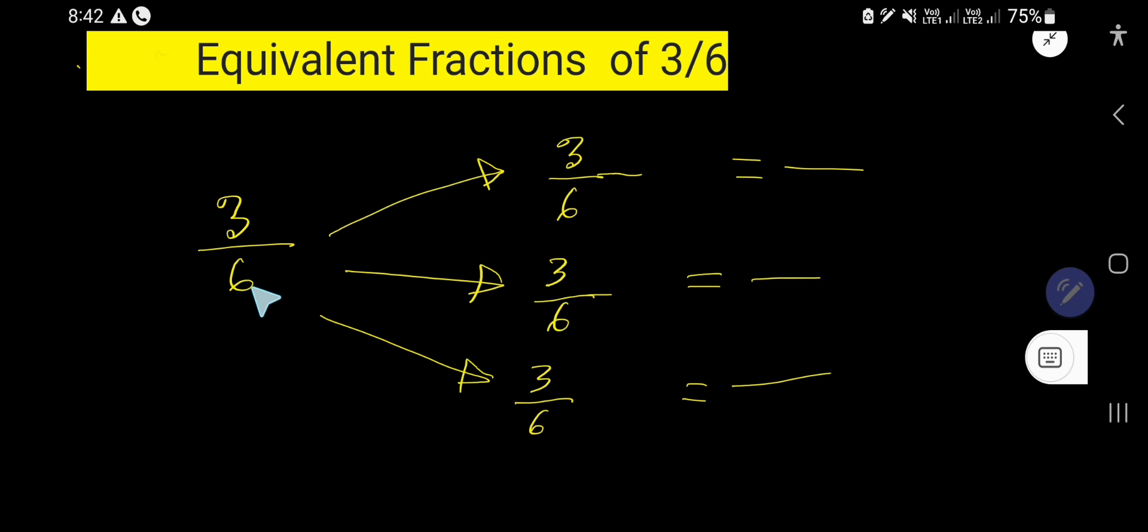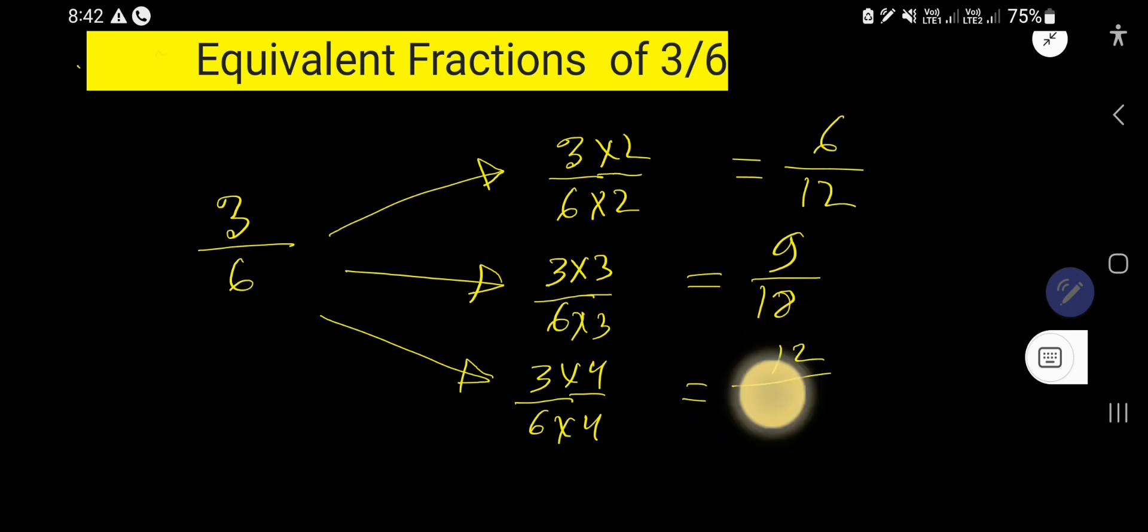Let us apply the first method, that is multiplication. So multiply here by 2, 2, so you are getting 6 over 12. If you multiply here by 3, 3, then you are getting 9 over 18. If you multiply here by 4, 4, then you are getting 12 and 24.